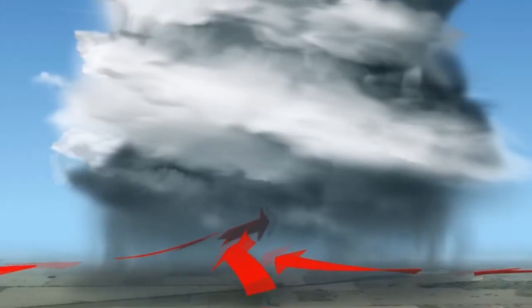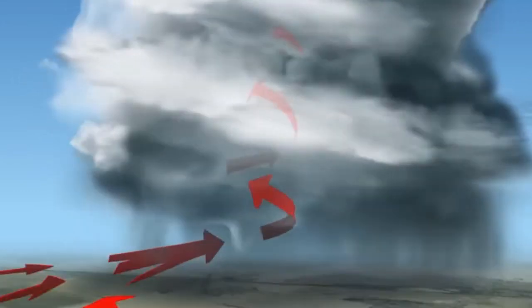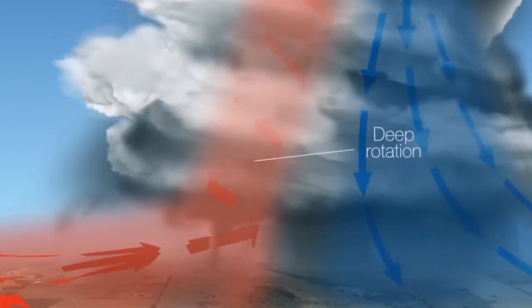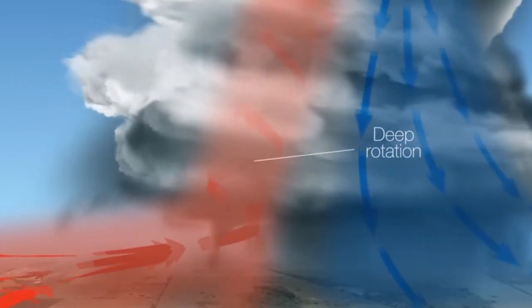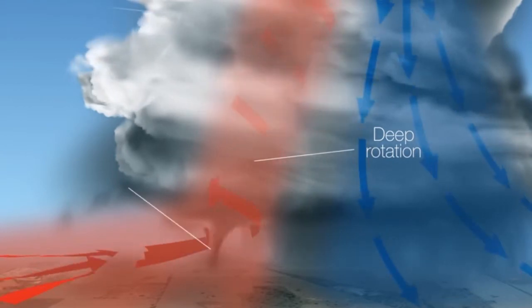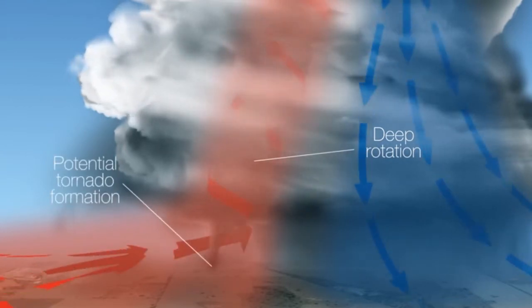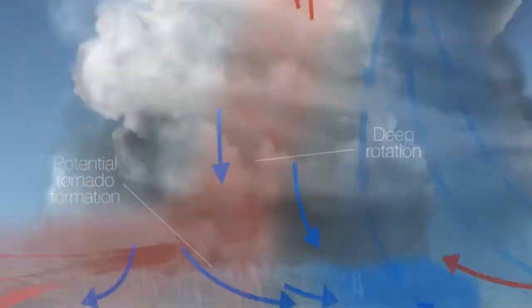The most violent thunderstorms draw air into a cloud base. If the incoming air has any initial rotational motion, it often forms an extremely concentrated vortex from the surface well into the cloud. This will result in tornadic activity.